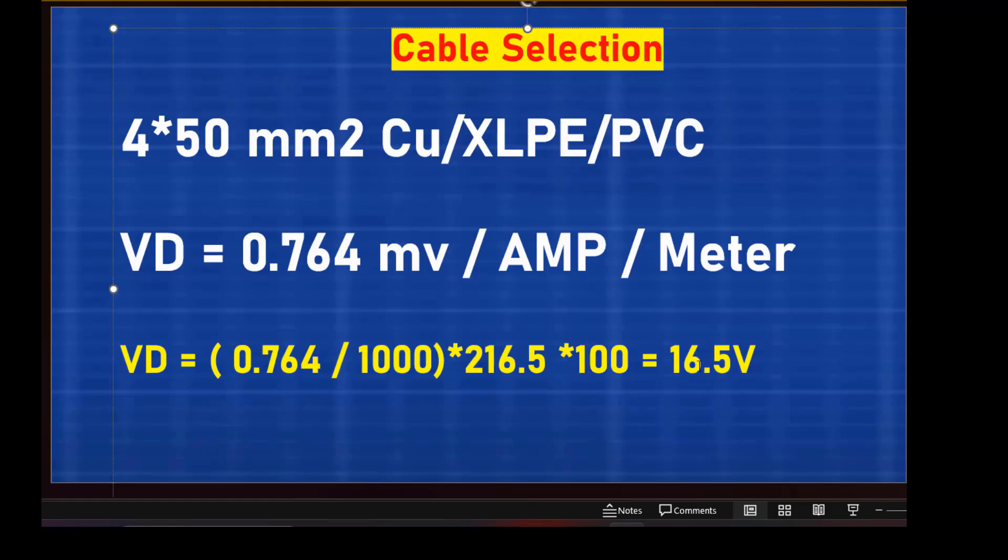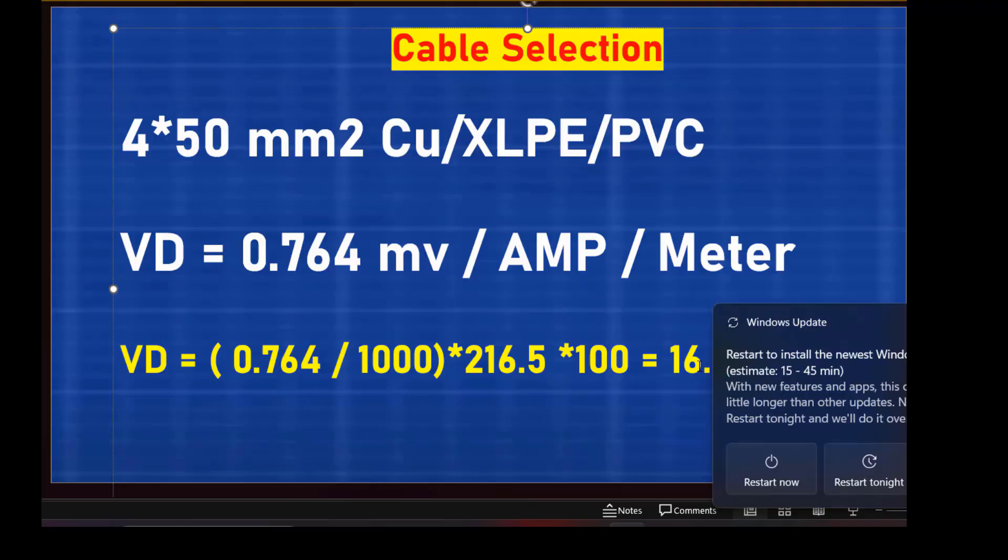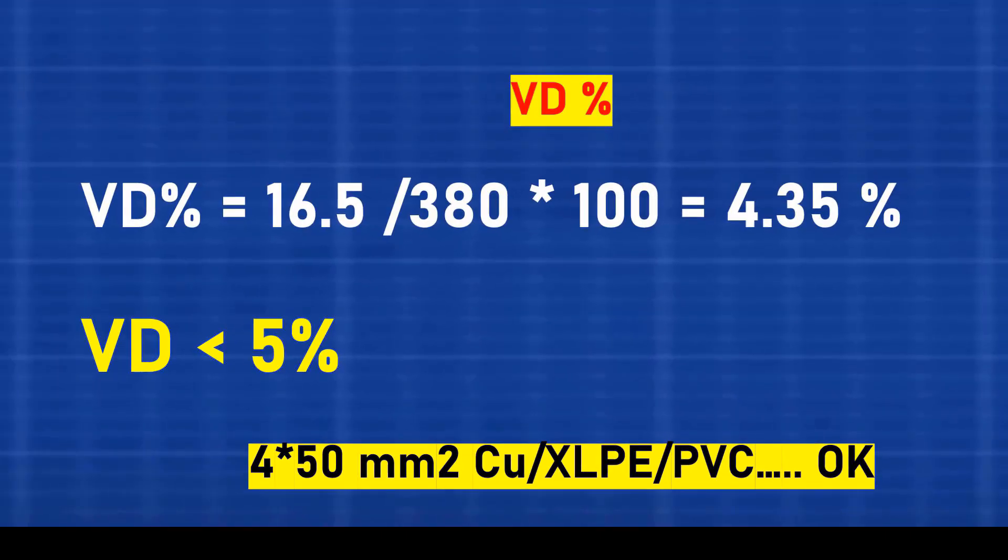Now, we calculate the voltage drop percentage. By applying the formula, we get voltage drop percentage equals voltage drop divided by source voltage multiplied by 100. So, voltage drop percentage equals 16.5 divided by 380 multiplied by 100, which equals approximately 4.35%.